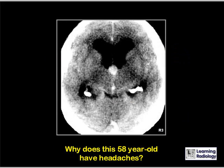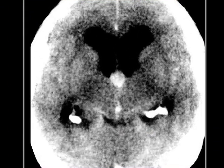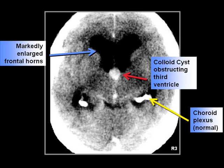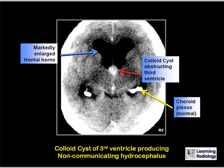Why does this 58-year-old have headaches? There are markedly dilated frontal horns of the lateral ventricles (blue arrow), produced by a mass sitting in the third ventricle that is obstructing them. This is a colloid cyst obstructing the lateral ventricles. The yellow arrow points to a normal structure, the choroid plexus, in the occipital horns. This is a form of non-communicating hydrocephalus produced by the colloid cyst.